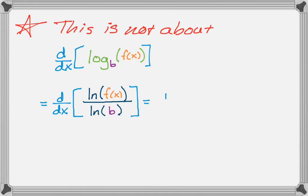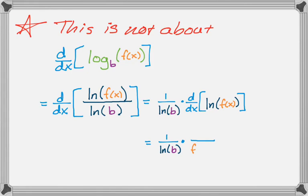Anyway, from there, if you were going to do this, you can factor out the 1 over natural log of b because that's just a number. So it's really 1 over natural log of b times the derivative of natural log of f of x, and then hopefully you know that derivative by now. So, not a video about this, but that's how you would do it if that's what you're here for.